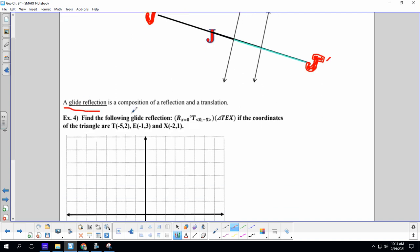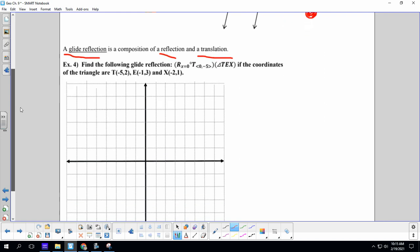All righty, a glide reflection is a composition of a reflection and a translation. Ooh, that sounds fun. Let's go ahead and do some of those. Find the following glide reflection. We're going to take triangle TEX and translate it down five and then reflect it across the line X equals zero. So, let's go ahead and put TEX on our graph.